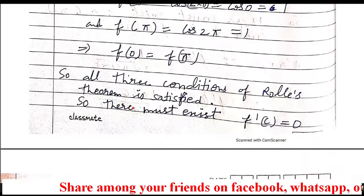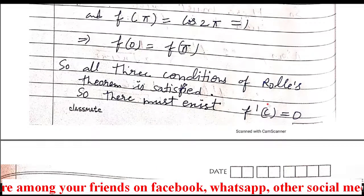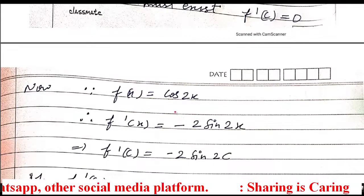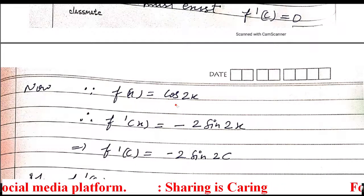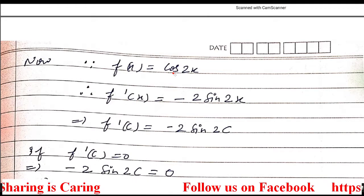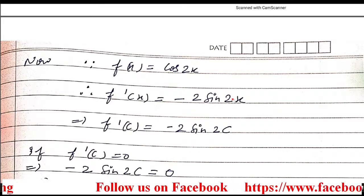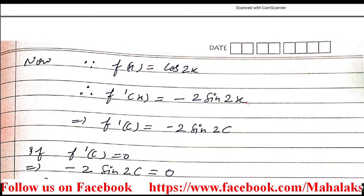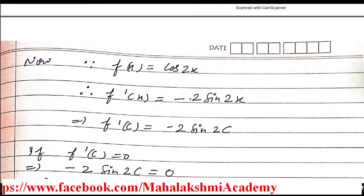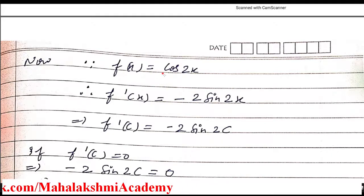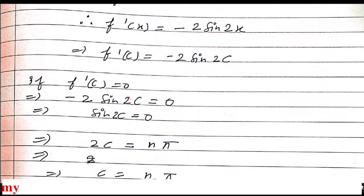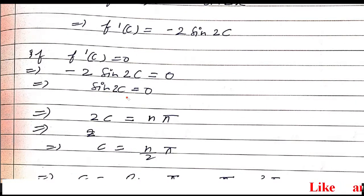All three conditions of Rolle's theorem are satisfied, so there must exist c in (0,π) such that f'(c) = 0. To find c, we differentiate f(x) = cos(2x). The differentiation gives f'(x) = minus 2·sin(2x), where the factor of 2 comes from the chain rule applied to 2x. Setting f'(x) = 0 gives sin(2c) = 0.